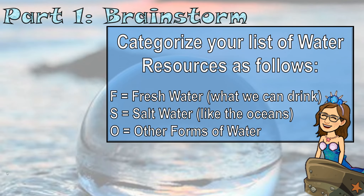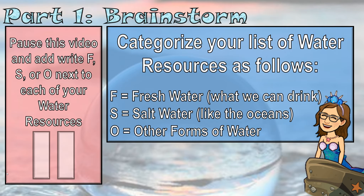I want you to categorize your list of water resources. Write an F next to all of your fresh water resources in your brainstorm, an S next to any salt water resources, and an O next to other forms of water. You must have one example of each: one example of fresh water, one example of salt water, and one example of other forms of water. Please pause the video now.